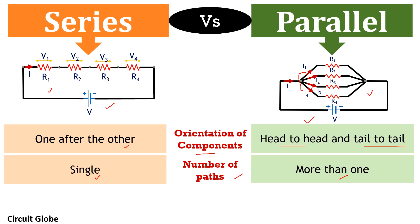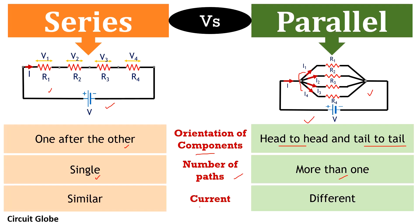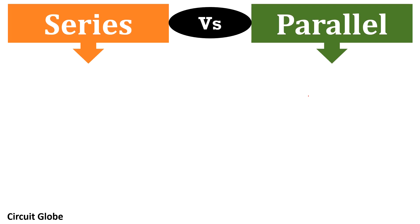Now talking about current: in a series circuit, due to single path orientation, a single current flows through all the components present in the circuit. While in a parallel circuit, due to the presence of multiple branches, individual current flows through each branch — the overall current gets distributed amongst all the branches. Thus, unlike a series circuit, different current flows through different components, and the total current I equals the sum of I1, I2, I3, and I4.